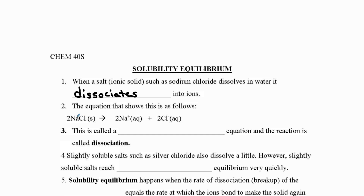All these salts will be solid, and we're adding them to water. When sodium chloride gets added to water and stirred around, it breaks apart into its two separate ions — sodium and chloride. The sodium ion and the chloride ion have their charges and are aqueous because they're dissolved in the water. We call this a dissociation.